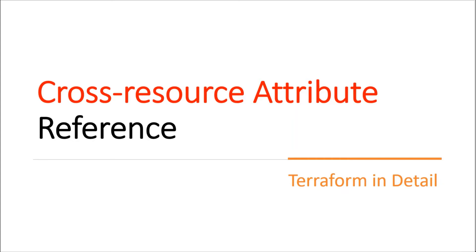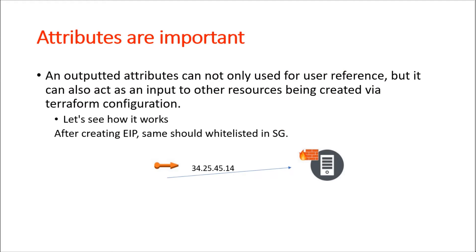Welcome back to Chaiademy. Today we are going to discuss cross-resource attribute reference, which is a continuation from the previous video on same attributes and output values reference. As we already discussed, attributes are very important. An output attribute cannot only be used for our own reference — whenever we use an output of a specific attribute printed at the output section, it is not only for the user's reference but can also be referenced as input for other resources being created via Terraform configuration.